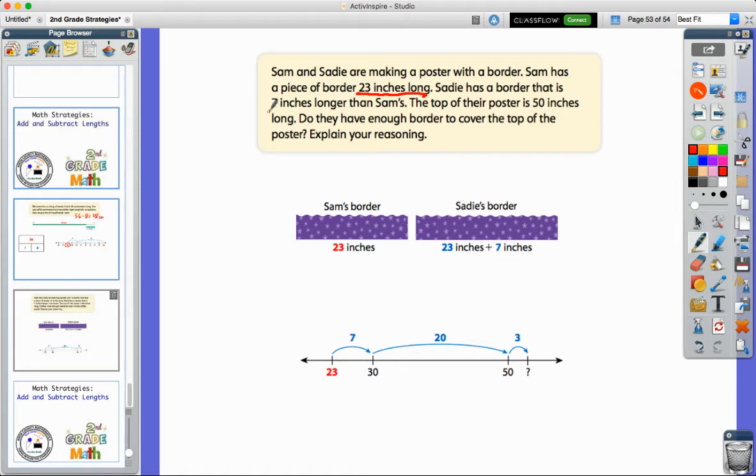But we know that hers is seven inches longer. So here on Sadie's picture, we're starting off with the 23 inches that Sam had, but hers is seven inches more. So let's go ahead and figure that out. How long would that be? 23 and seven makes that a total of 30 inches.